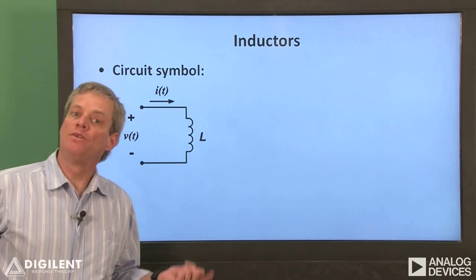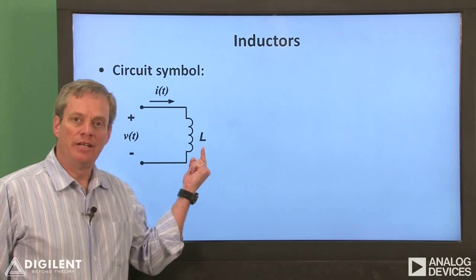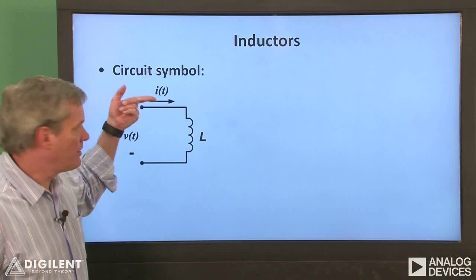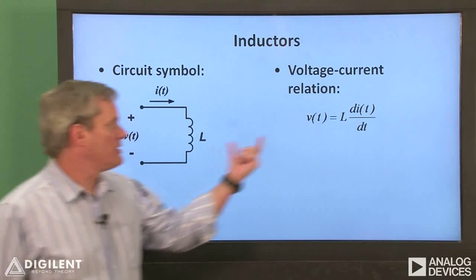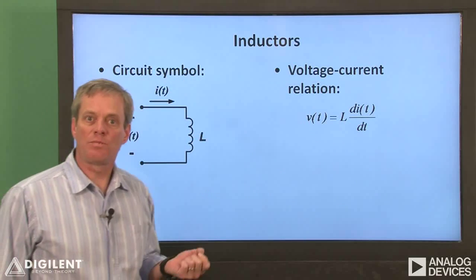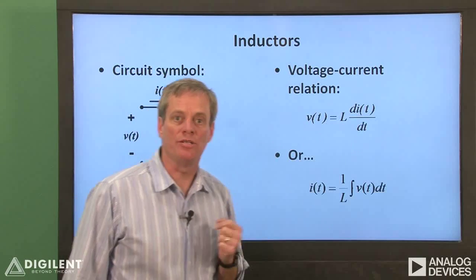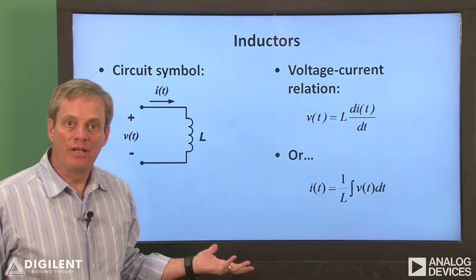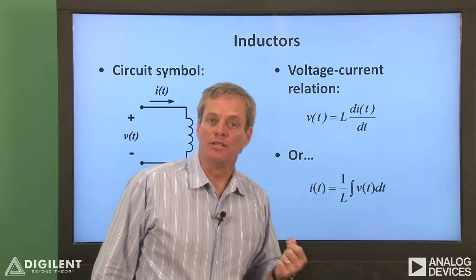First, just a quick reminder about the theoretical voltage-current relationship for inductors. If we have an inductor with an inductance L, and apply a current I to it, the voltage V across the inductor is L times di/dt. We can convert this expression to an integral relationship by integrating both sides of this equation. Therefore, the current through an inductor is 1 over L times the integral of the voltage across the inductor.